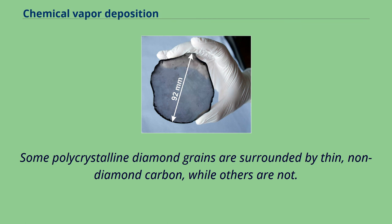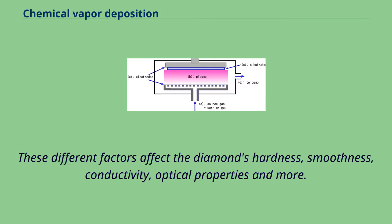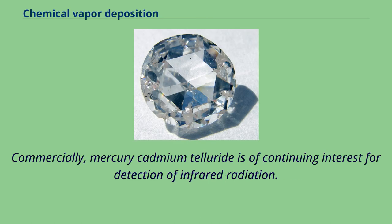Commercially, mercury cadmium telluride is of continuing interest for detection of infrared radiation. Consisting of an alloy of CdTe and HgTe, this material can be prepared from the dimethyl derivatives of the respective elements.